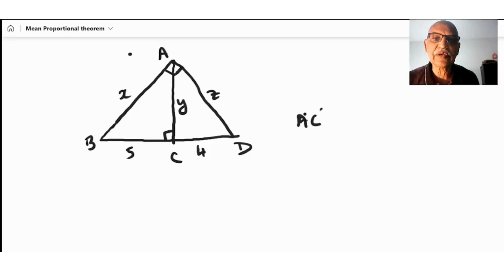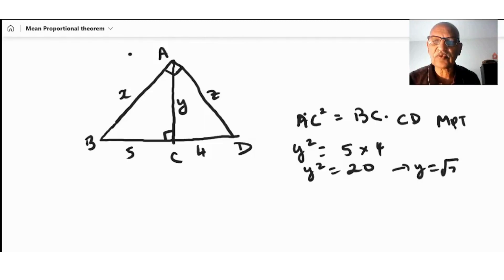If we have this kind of triangle, then we say AC square is equal to BC times CD. This is the mean proportional theorem. So AC squared, which is y squared, is equal to 5 times 4, so y squared equals 20.